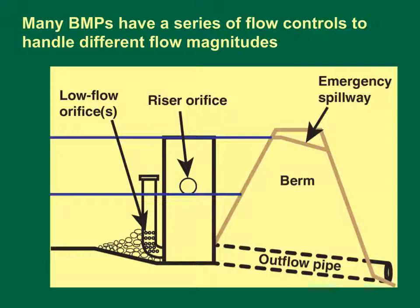Many BMP designs have a series of flow controls to handle different flow magnitudes. This cross-sectional diagram shows components of a pond outlet. Many designs have an extreme flow spillway to prevent structural failure and one or more high flow outlets to quickly drain water when flows are high. Water quality outlets commonly are designed to slowly drain the water to maximize contact and settling times for the water quality volume. In this diagram, the riser orifice is the high flow outlet and the low flow orifice is the water quality outlet.